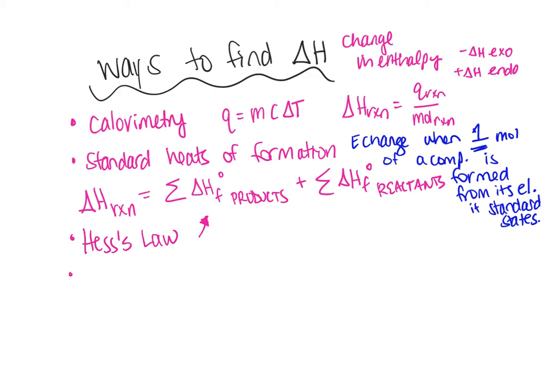Then the last way we use to find delta H of a reaction is through bond energies. So when you're using bond energies or bond dissociation energies, you need to do your Lewis structures. Now, at the start of the year, because we hadn't covered that yet, I drew them for you. Well, that's not going to happen anymore.